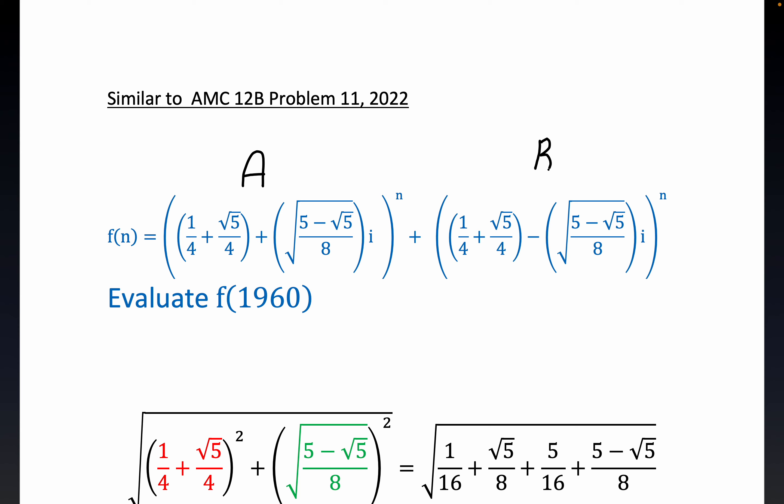Now this looks pretty much impossible given the size n's a natural number and so we're supposed to evaluate f at 1960. Now the way we've relabeled this, that's just the same thing as saying A to the 360 plus B to the 360, or 1960, excuse me, plus B to the 1960.